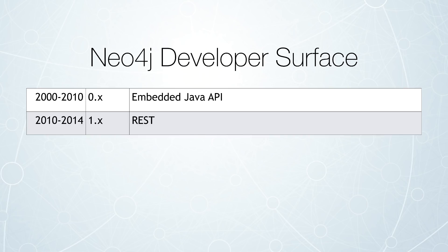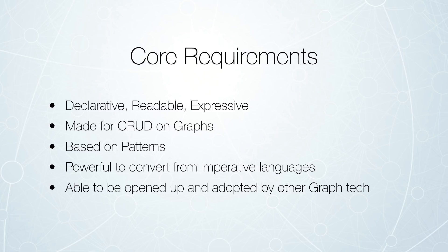This REST-based API was still pretty low level. We had some different requirements as we expanded Neo4j's adoption and it became more popular by different communities. So we really wanted a declarative query language that's readable and expressive, very similar to how many developers use SQL when interacting with tables. We wanted a similar declarative language for graphs. We wanted it to be able to do all CRUD operations — create, read, update, delete — not just be a querying language. We also wanted to base it on patterns, the core patterns that you're looking for in a graph. And we wanted to make it really powerful so that you could convert people from using the more imperative languages over to this declarative language.